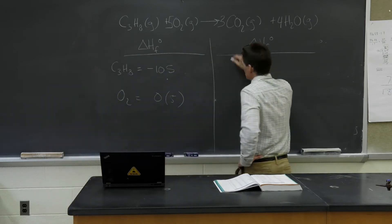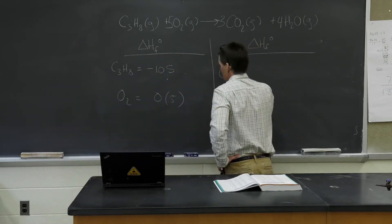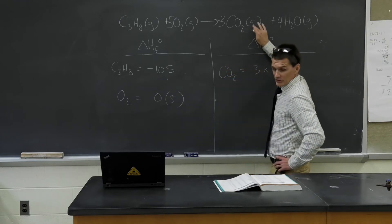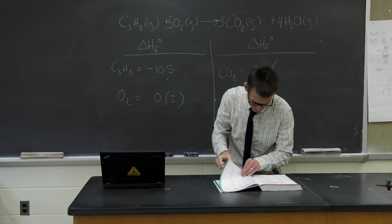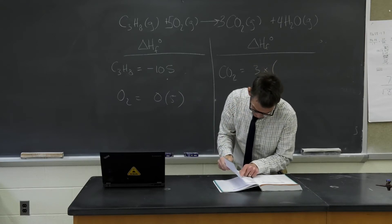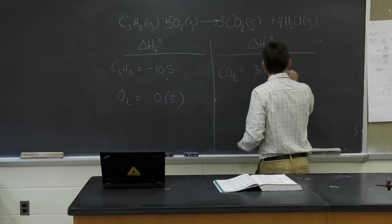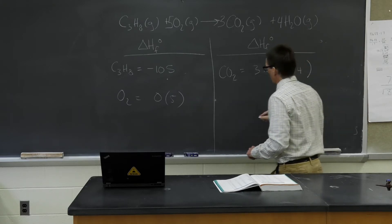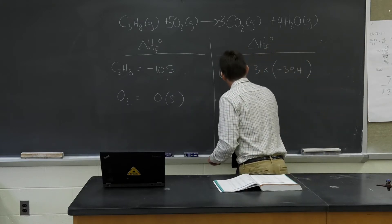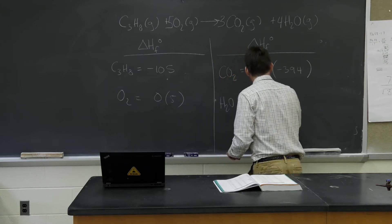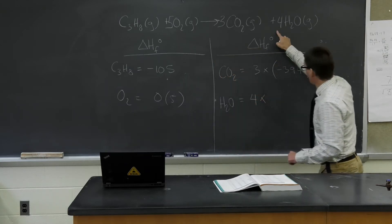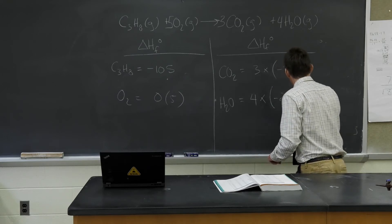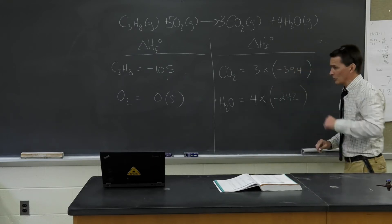Over here I need CO2. That's going to be three times the enthalpy of formation of carbon dioxide. Carbon dioxide gas is minus 394 kilojoules per mole. Then for water — it's gaseous water — that's four times negative 242 kilojoules for every mole of water that's produced.